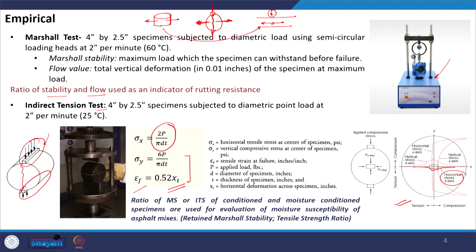The ratio of ITS of conditioned to unconditioned — basically dry and moist condition specimens — are used for evaluation of moisture susceptibility. Both Marshall stability and indirect tensile strength tests are empirical, and the ITS value is also used to determine the load level for the resilient modulus test.